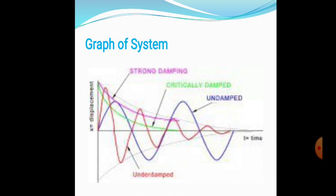A typical graph shows amplitude variation with time. The pink line shows strong damping — the amplitude decreases continuously. The green line shows critical damping — amplitude goes to rest position. The blue line shows undamped vibration — the amplitude remains nearly constant throughout. The red line shows under-damped vibration — the amplitude decreases progressively with time.